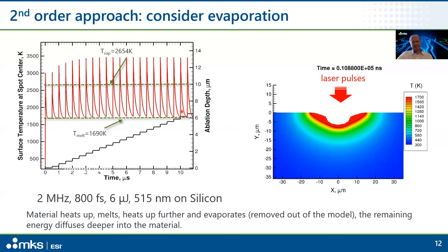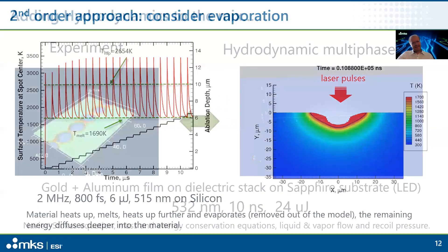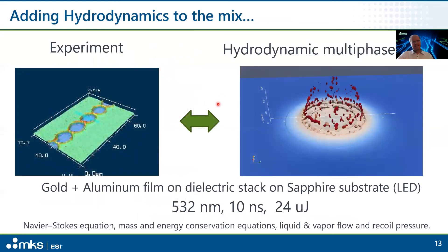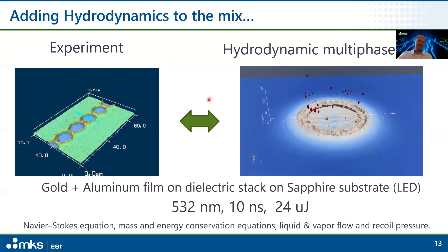For an ultrafast process, you can add a two-temperature model to the calculation — still relatively straightforward to run on a desktop computer. But if you really want to understand it on a more granular level, you have to solve the Navier-Stokes equations, meaning you have to add hydrodynamics to the mix.